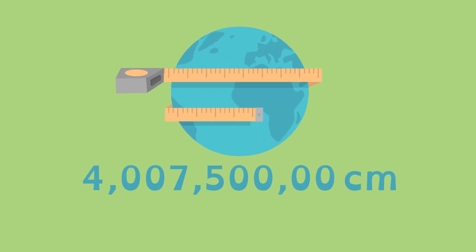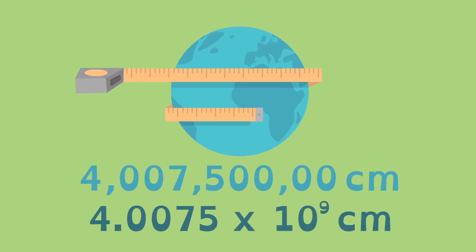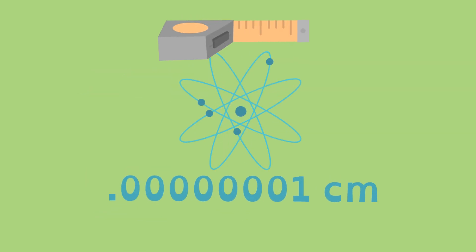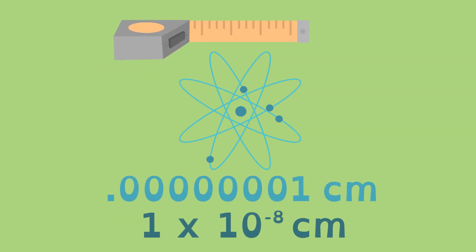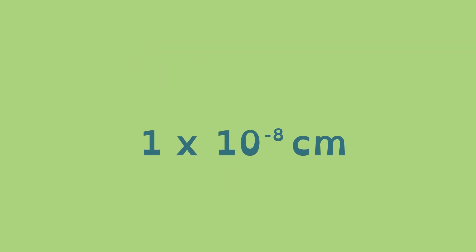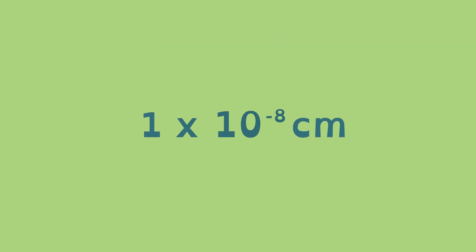Scientific notation is a concise way to express very large numbers, such as the circumference of the Earth in centimeters, or very small numbers such as the diameter of an atom. Scientific notation is written as a product of a number and a power of 10.